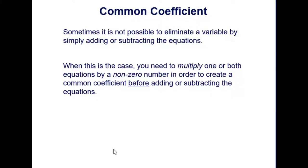Common coefficient. Sometimes it is not possible to eliminate a variable by simply adding or subtracting the equations. When this is the case, you need to multiply one or both equations by a non-zero number in order to create a common coefficient before adding or subtracting the equations.